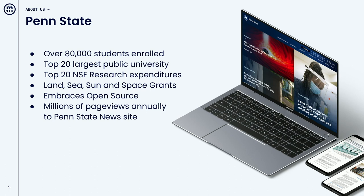Penn State is big — really big. Not only by counting students and alumni, our research enterprise is enormous on the scale of Johns Hopkins, MIT, and Michigan, if you measure by National Science Foundation funding metrics. We're one of only two universities with all four grants: land, sun, space, and sea. The website we're here to talk about today — our news website — is a single large website that has told research stories for 20 years, highlighting the impact of our science on the commonwealth of Pennsylvania, on the nation, and on the world.